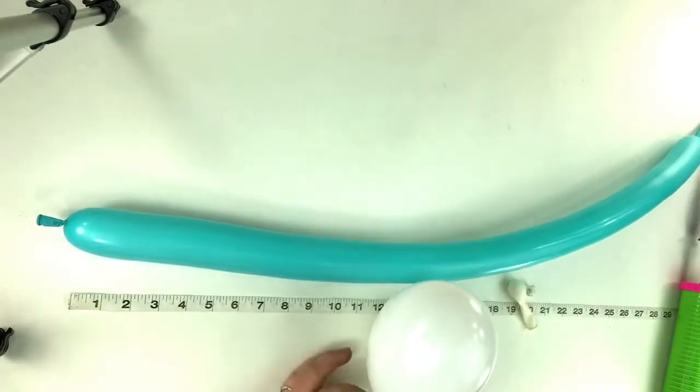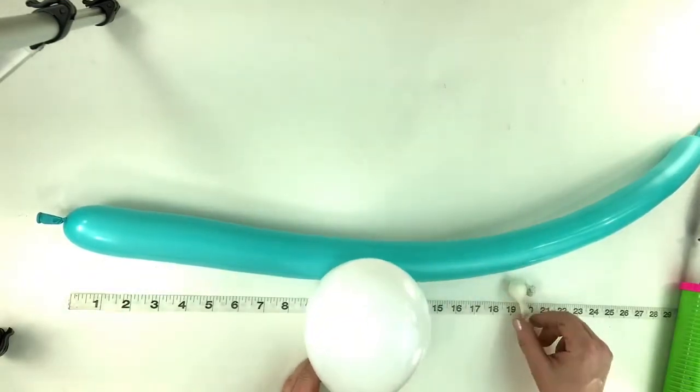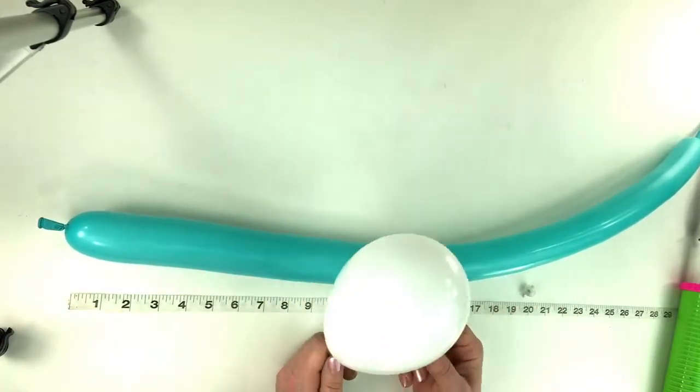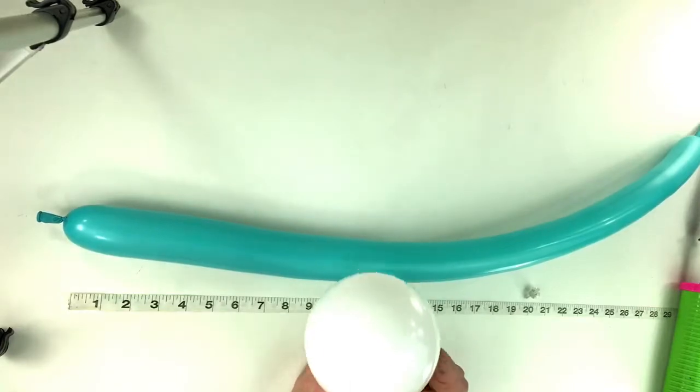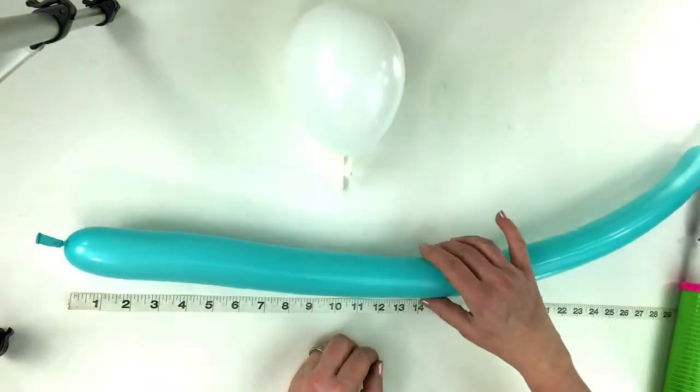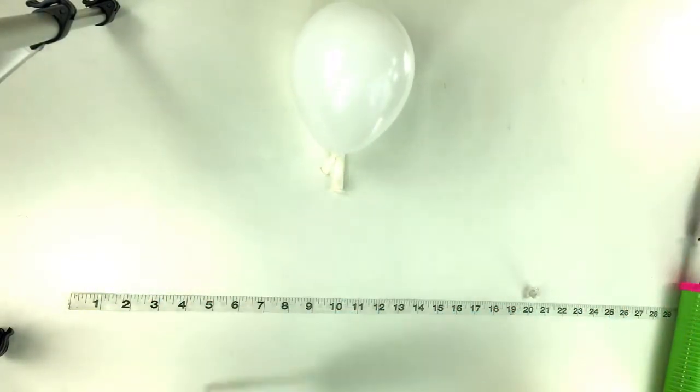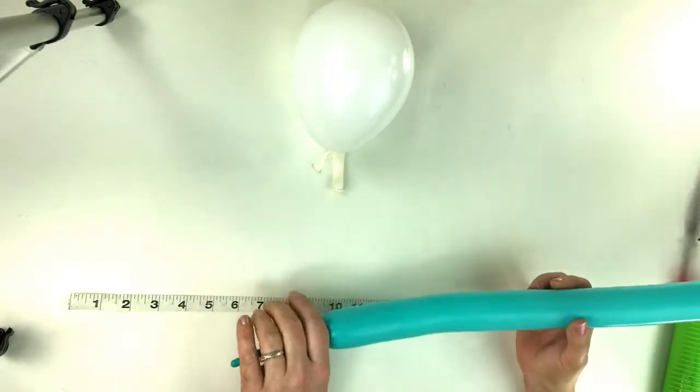Okay, now let's make a snowman. For this we're gonna use two 5-inch white rounds and a blue 260, and inflate the blue 260 all but a five finger tail.